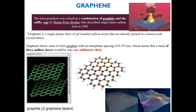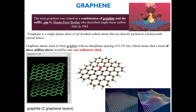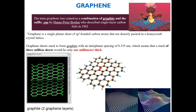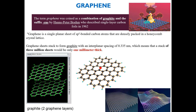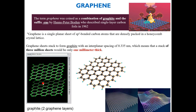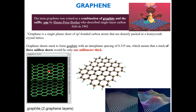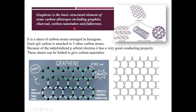Each carbon in graphene is sp2 hybridized, meaning it has an unhybridized p orbital with a free electron, which makes it a very good conductor. Graphene sheets stack to form graphite — two graphene layers make a graphite structure. Graphene is also the basic structural element: you can fold it to make CNTs, stack it to make graphite, or fold it differently to make fullerenes.